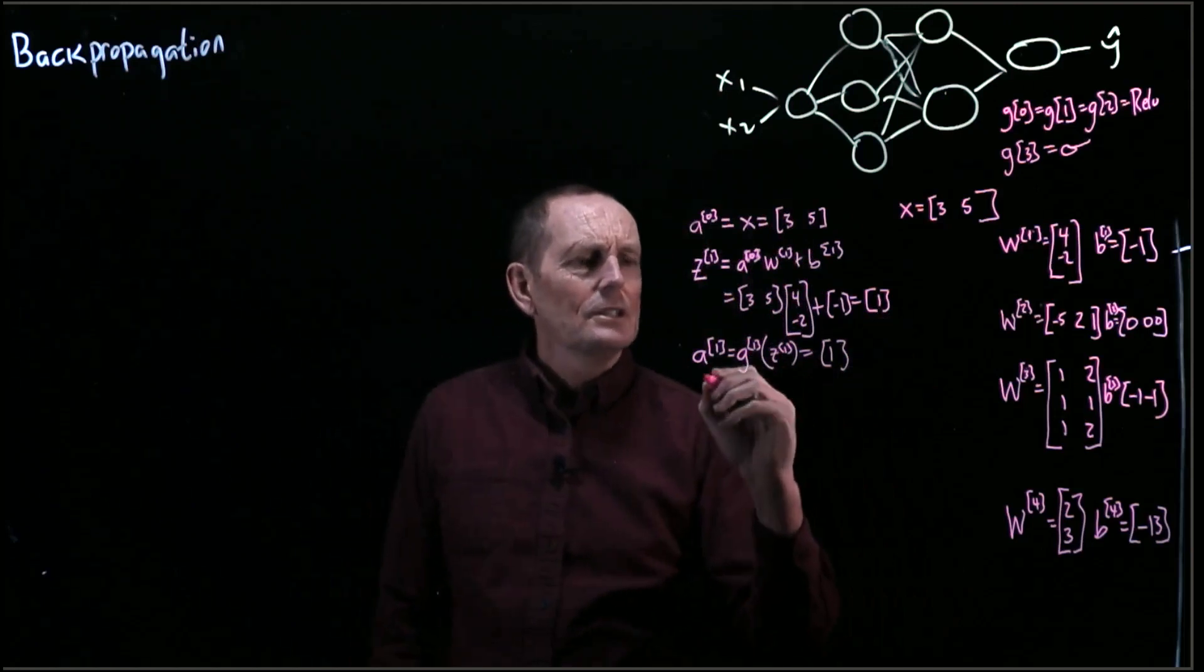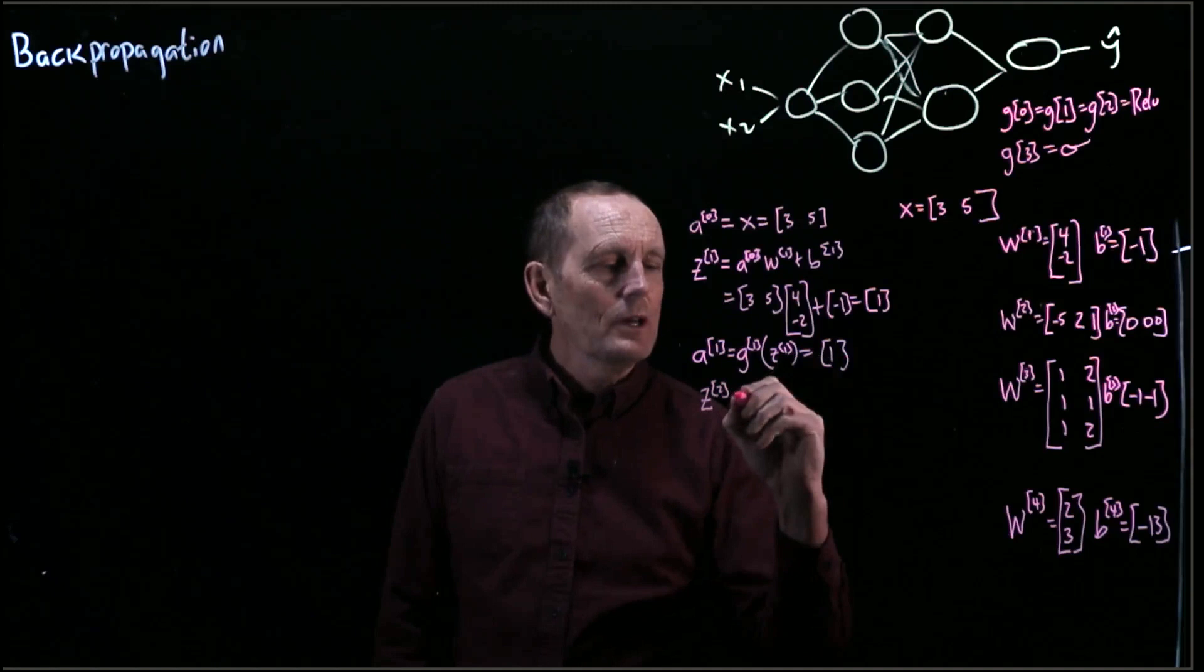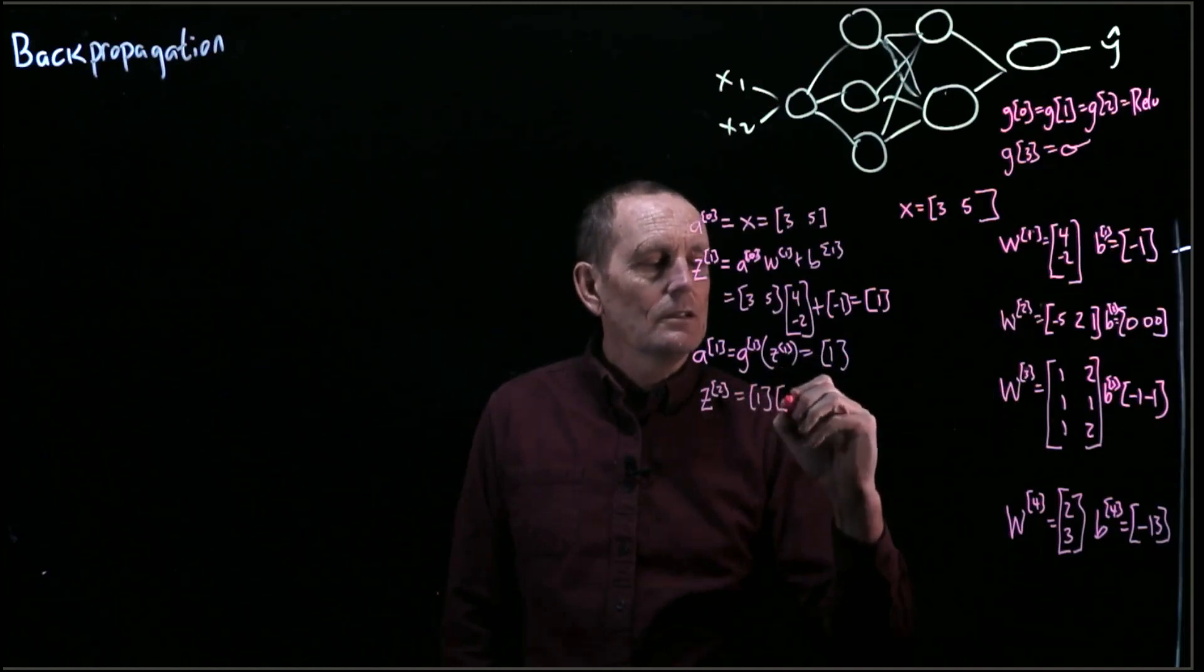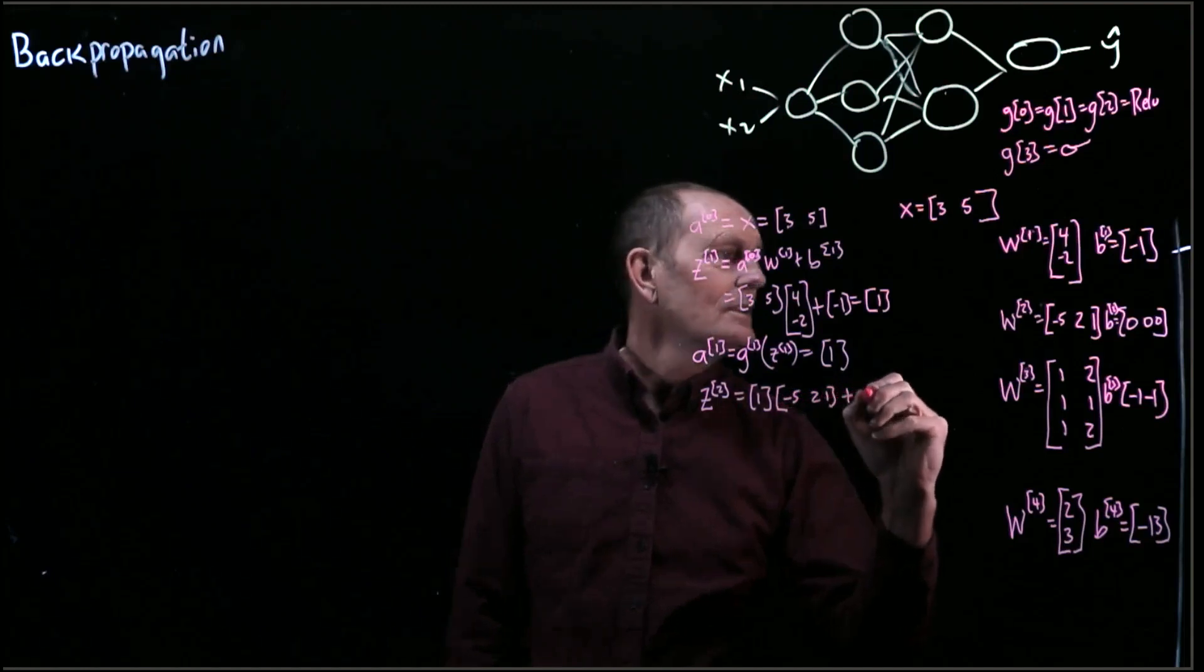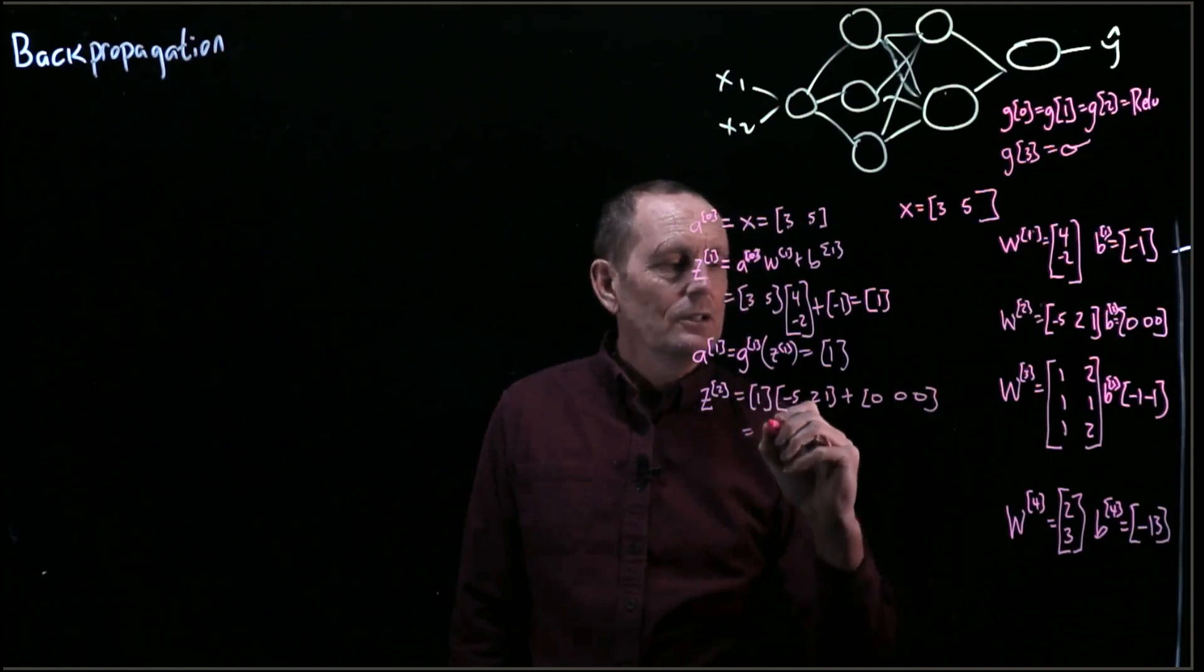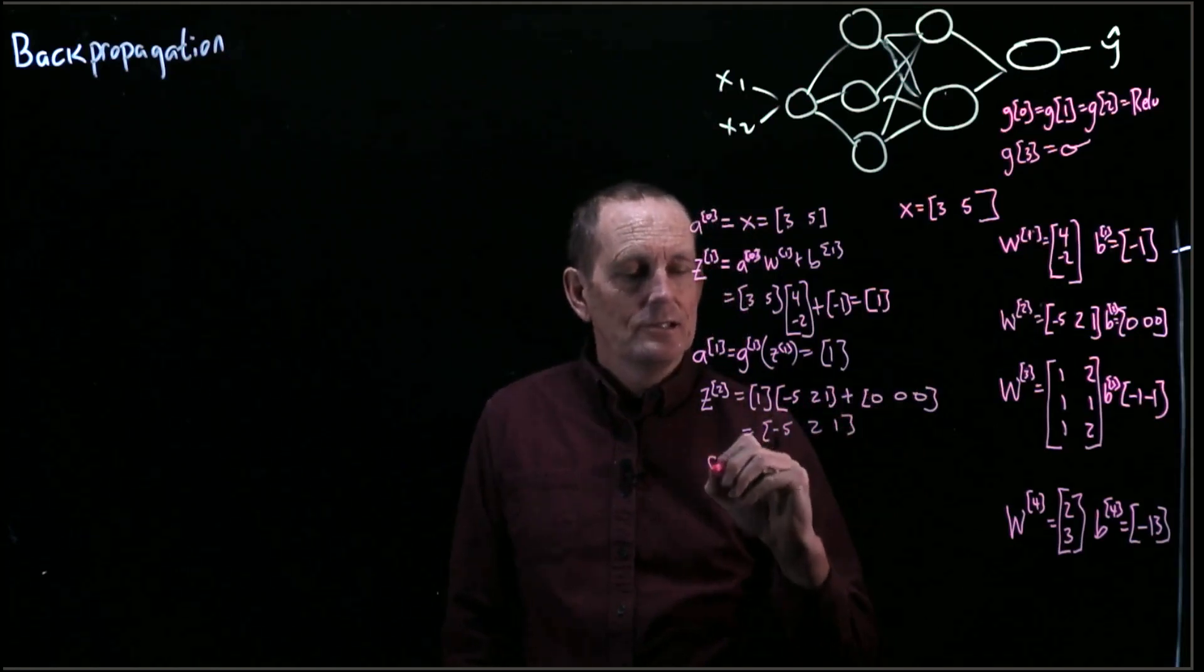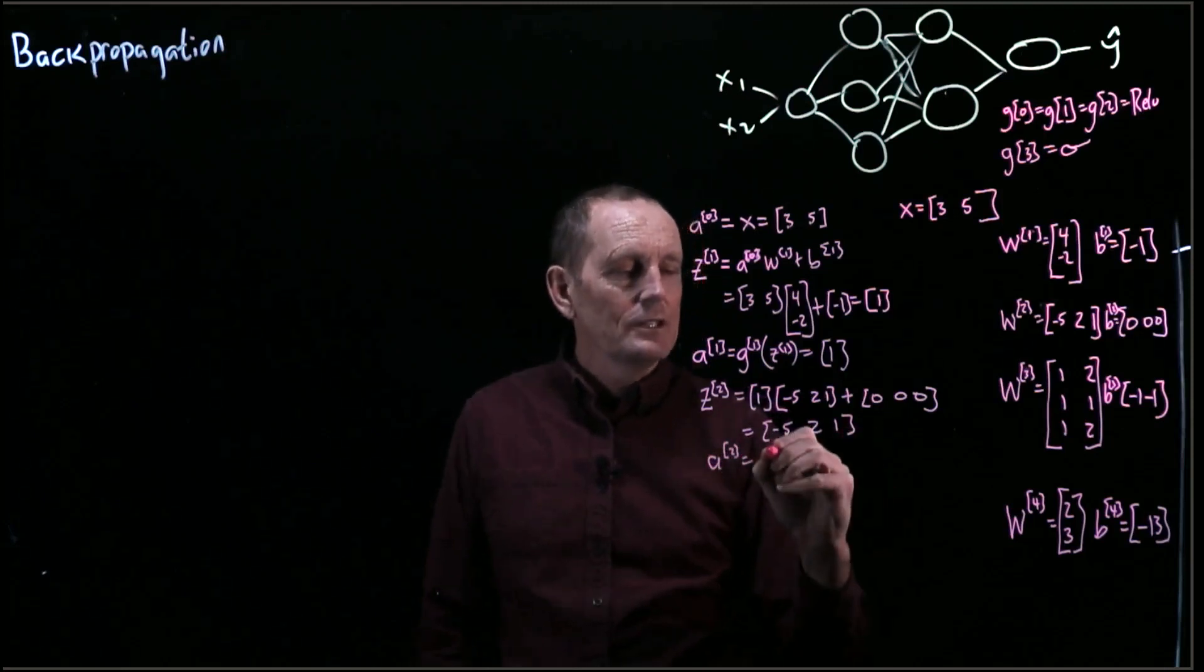Now we can go through and do this some more. So we can say Z at 2 is going to equal A at 1, which is 1, times W at 2, which is negative 5, 2, 1, plus 0, 0, 0. So that's going to equal negative 5, 2, 1, and then A at 2 is going to equal the ReLU of this.